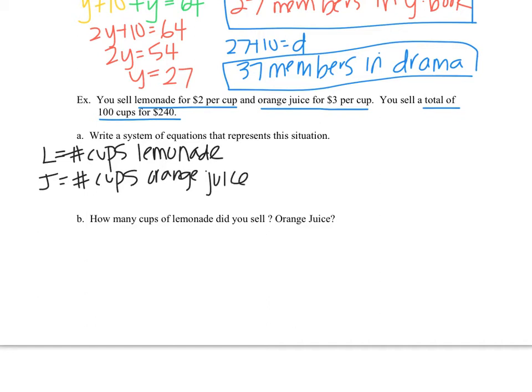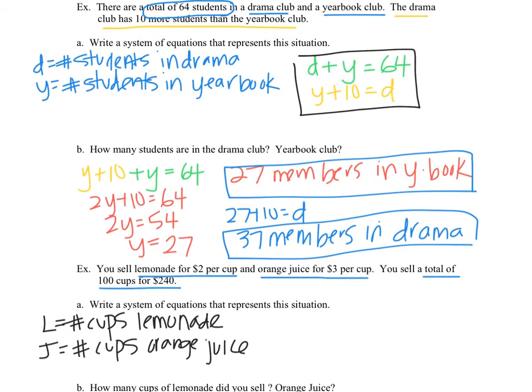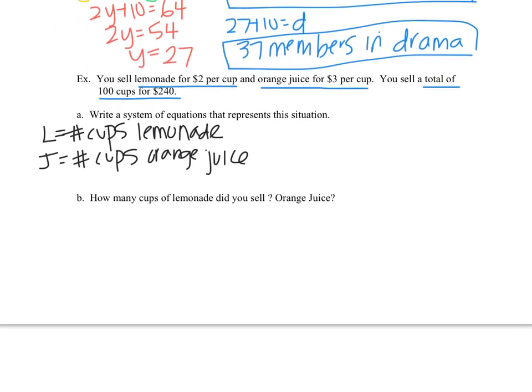If you're ever not sure what the variables are going to stand for, you look down at the question. It says, how many cups of lemonade did you sell? So that's how you know that the variable should stand for the number of cups. If you go up here, the question was, how many students are in the clubs? So you know that your variables are going to stand for the number of students in each club. So always go to the question if you're not sure what your variables should stand for.